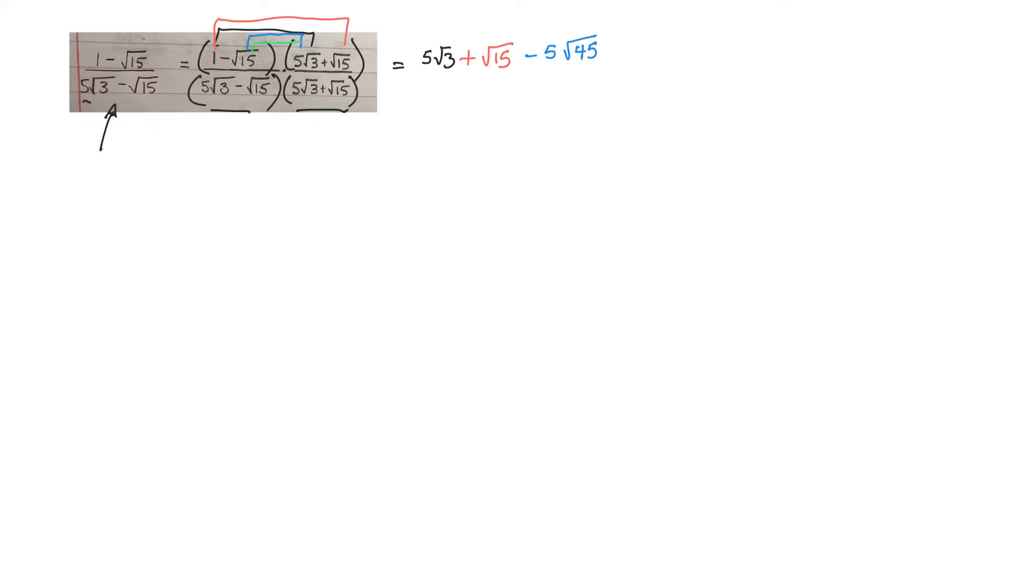And then this one times that one. That would be a minus root 15 times root 15. Root 15 squared. That will just be 15. Let's do the bottom one now.